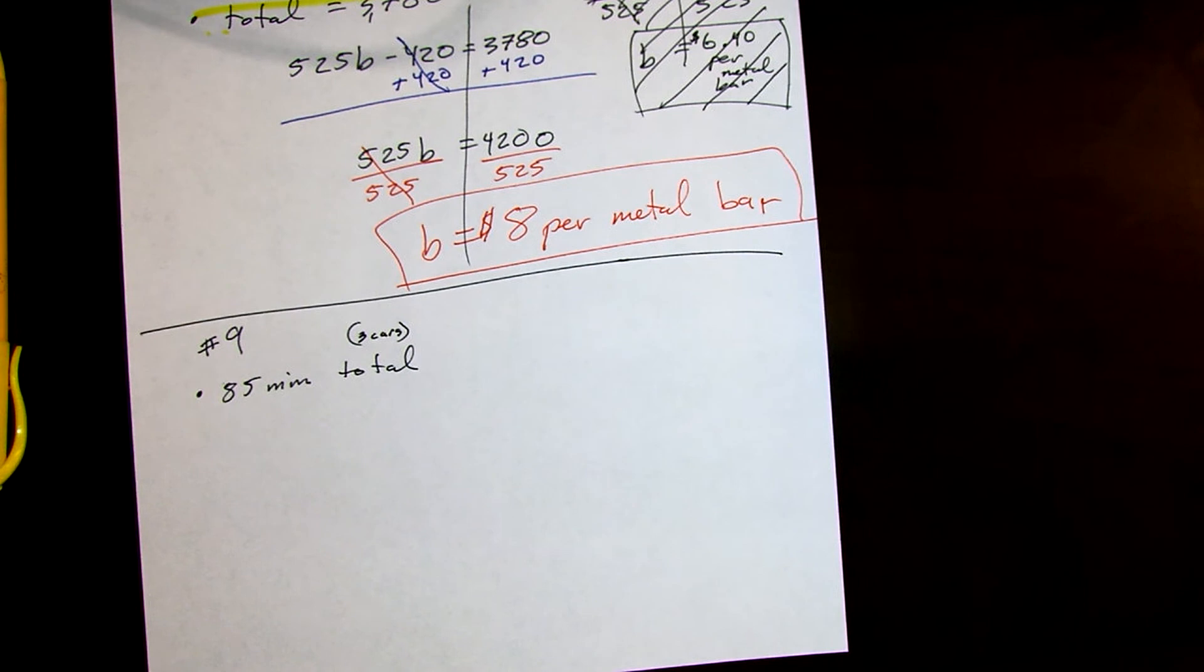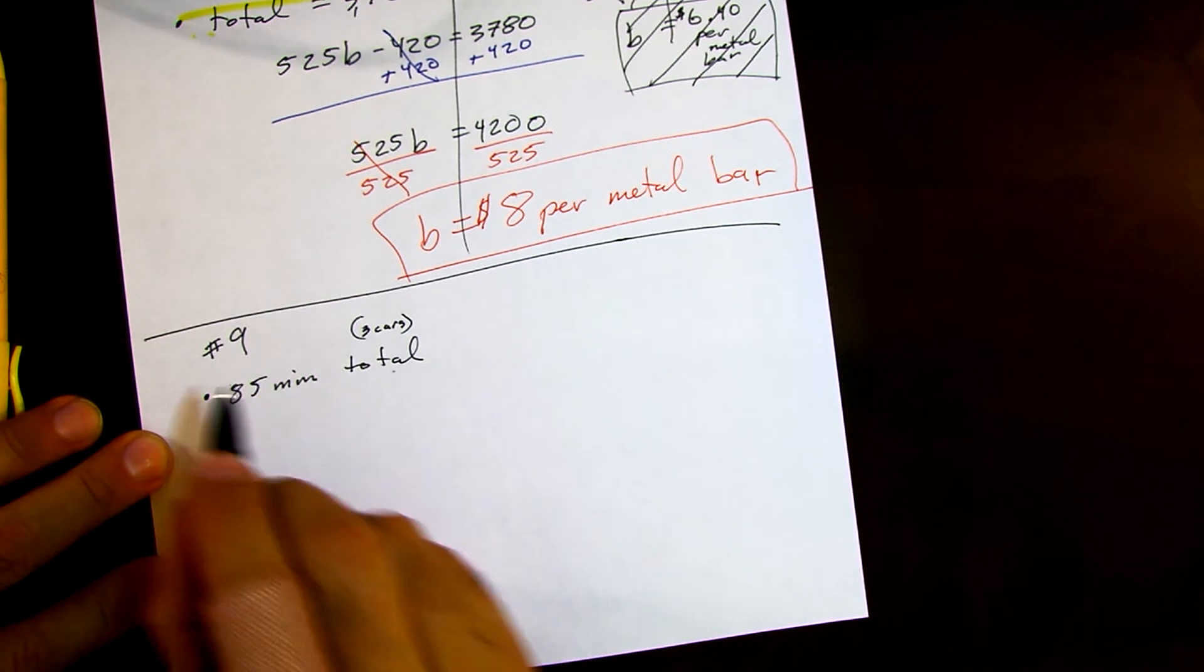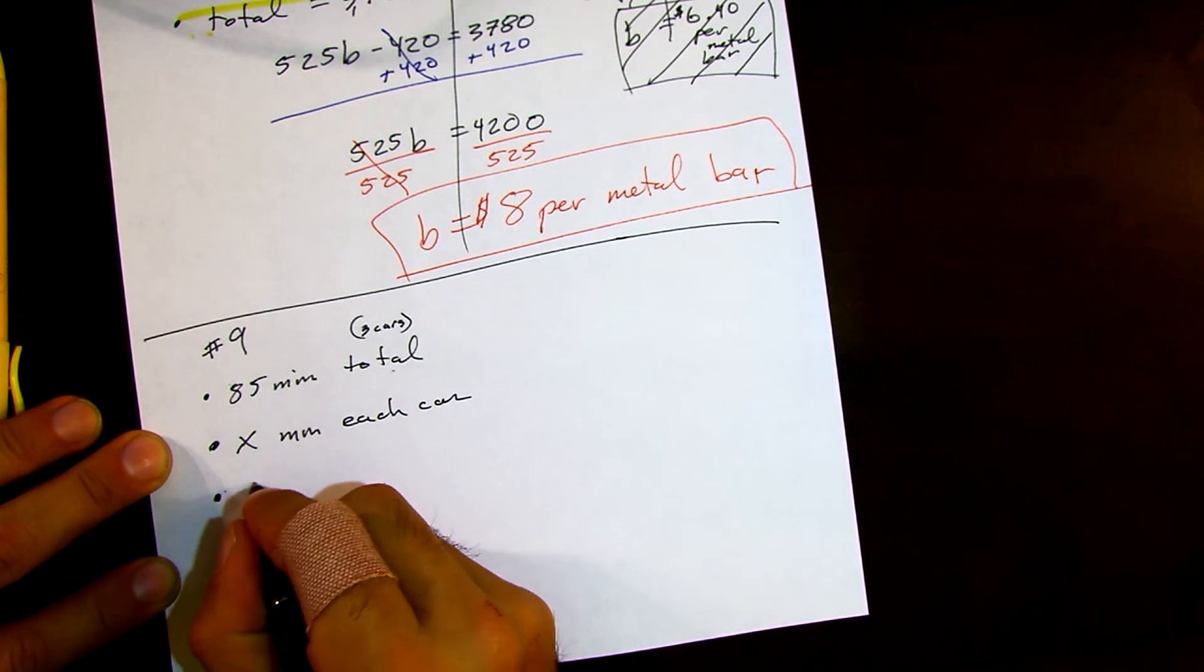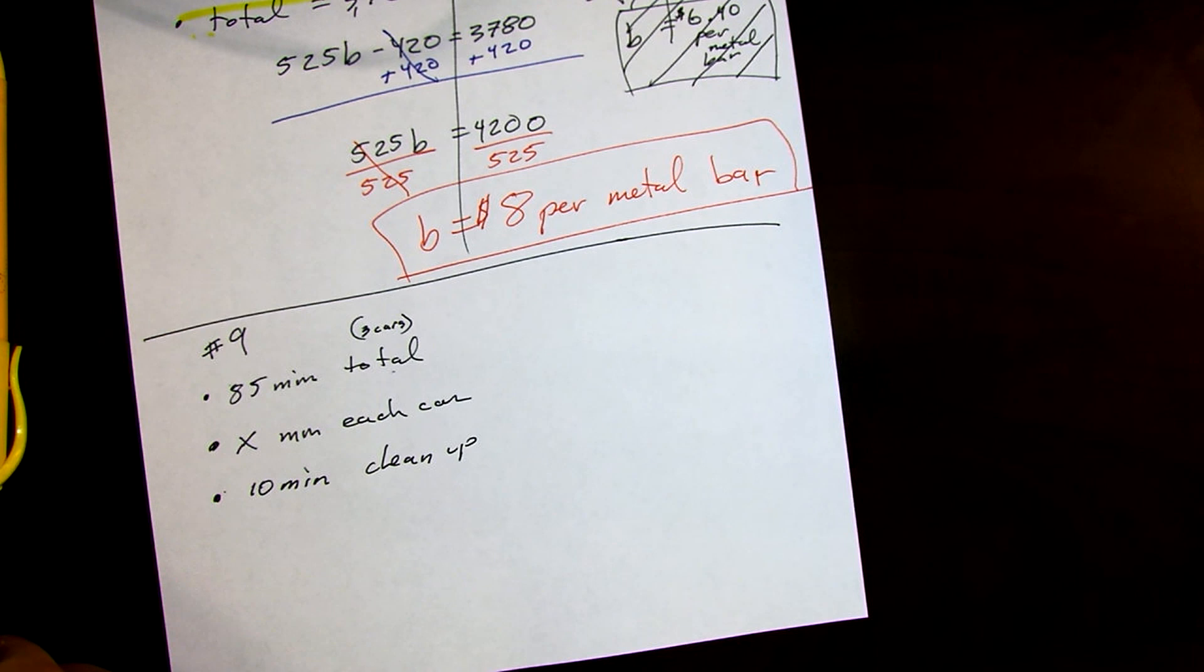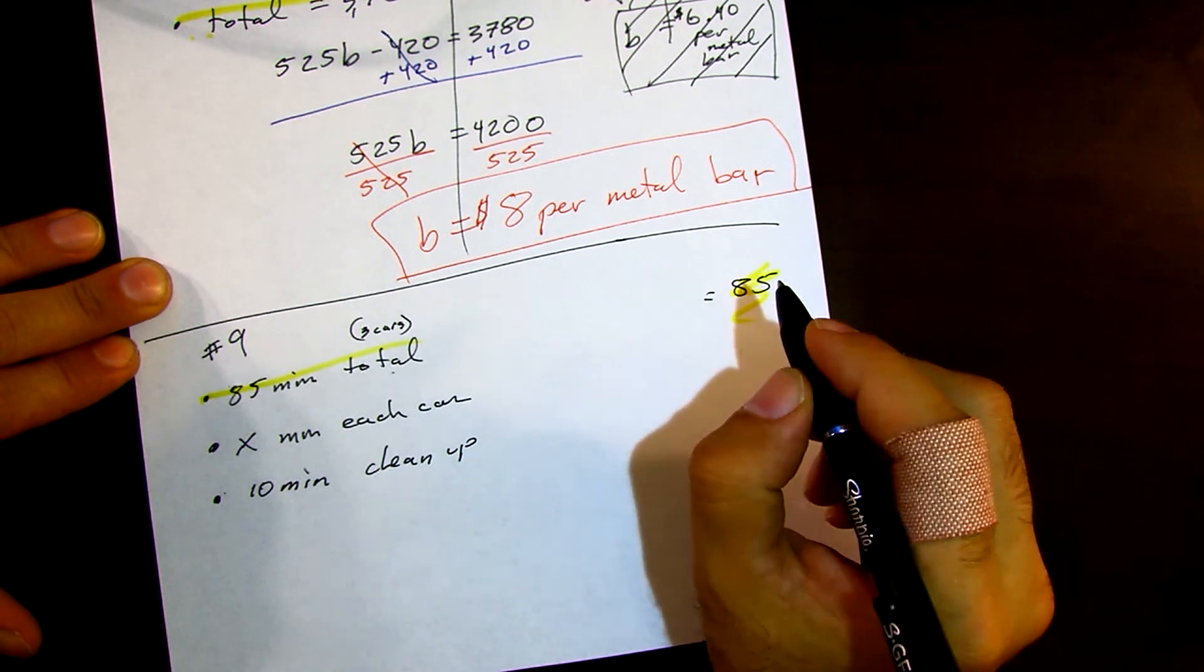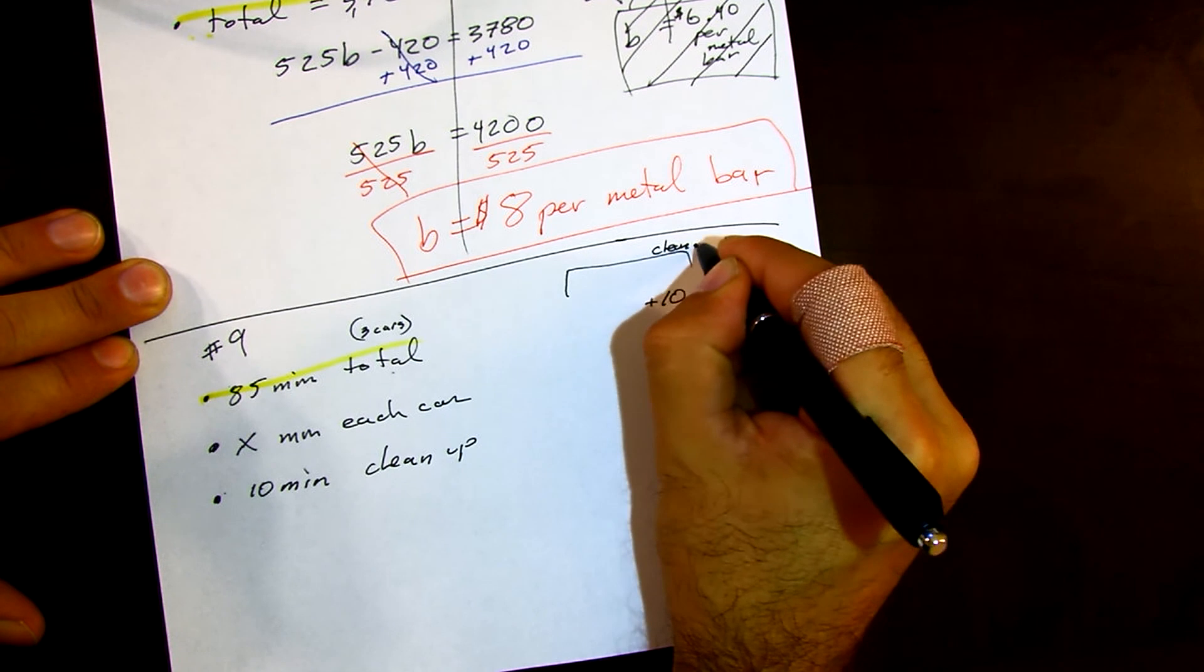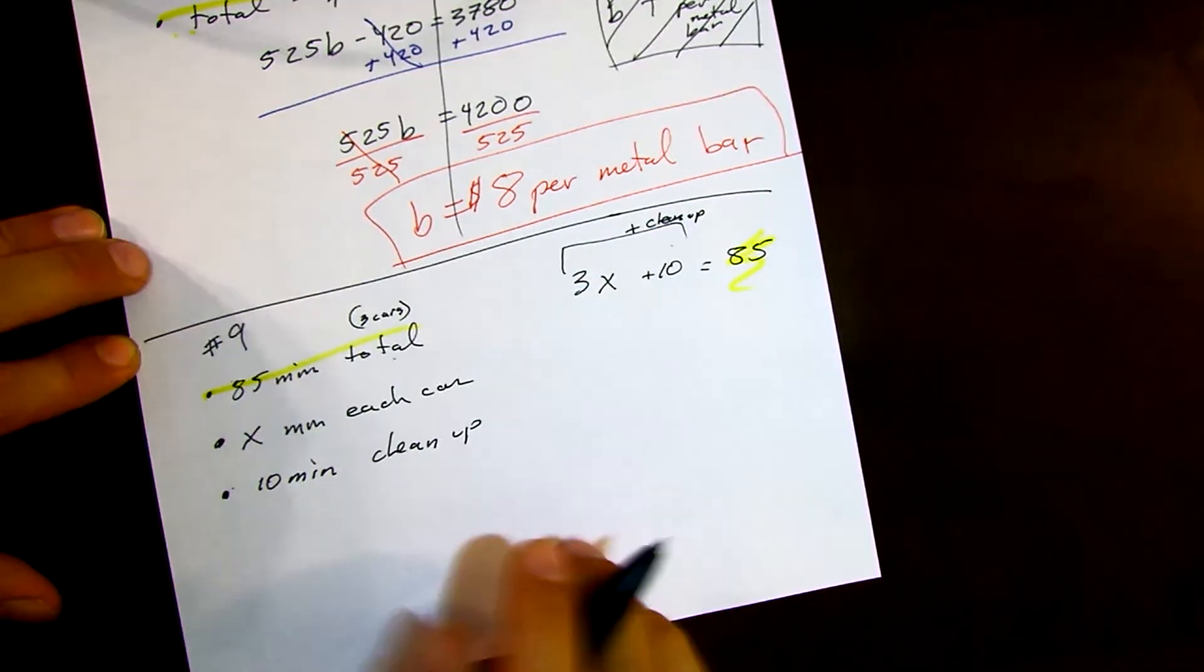All right, for number nine, it says it took Sharon 85 minutes to wash all three cars. So the total time is 85 minutes. She spent X minutes for each car and 10 minutes to clean up. How many minutes did she take on each car?